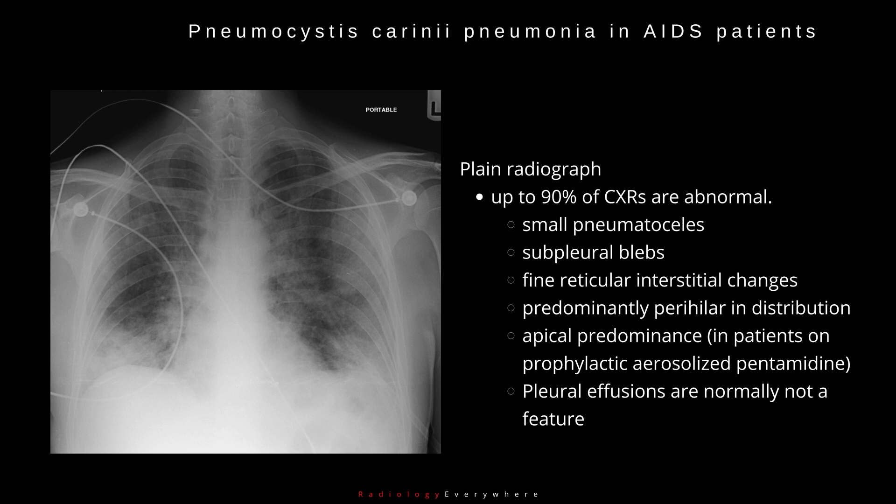Plain radiograph shows that up to 90% of CXRs are abnormal. Findings include small pneumatoceles, subpleural blebs, and fine reticular interstitial changes.